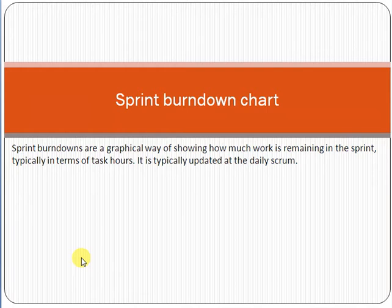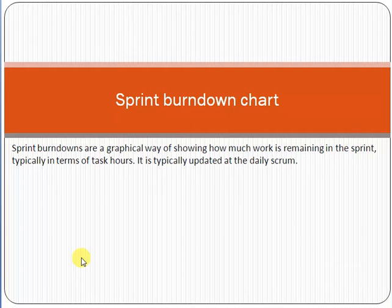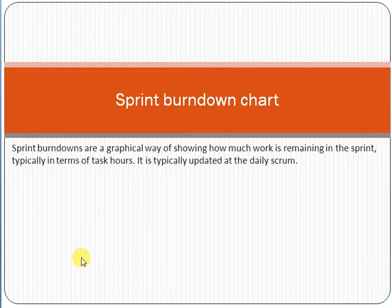When implementing projects using scrum, we have a product backlog — a document containing all the functional requirements of the customer. From the product backlog, we create the sprint backlog, which is a sub-document. For example, if there are 40 tasks in the product backlog, we take 10 tasks to form the sprint backlog. The scrum team then starts development and must complete those 10 tasks within the three to four week sprint.